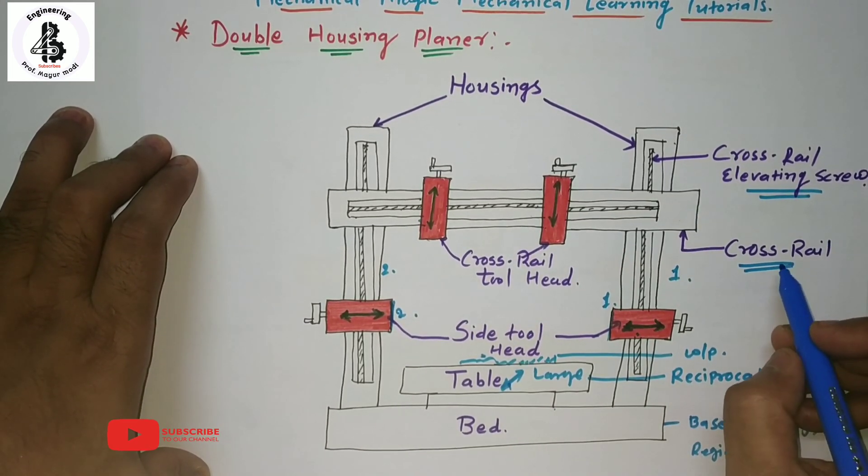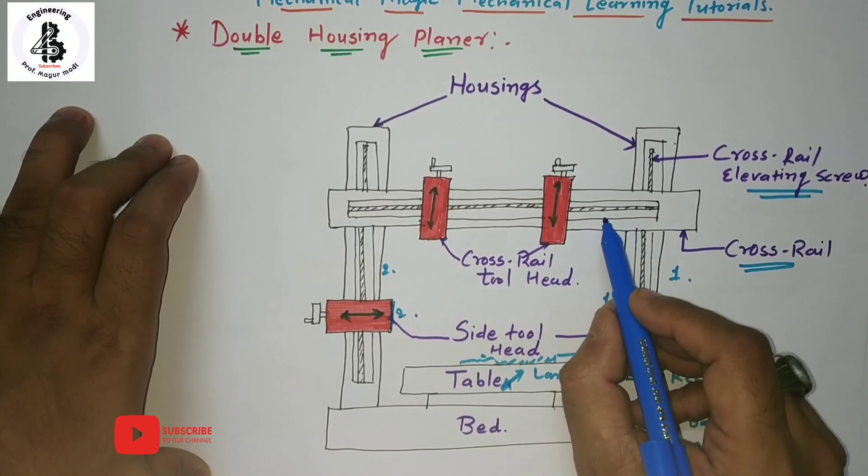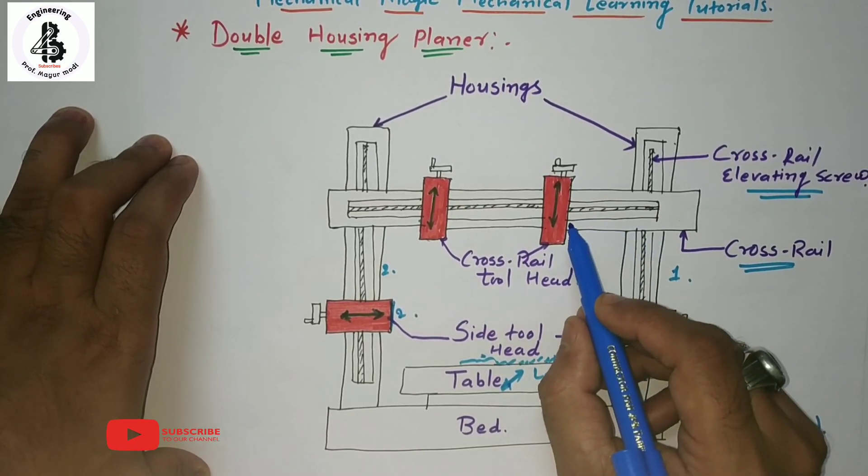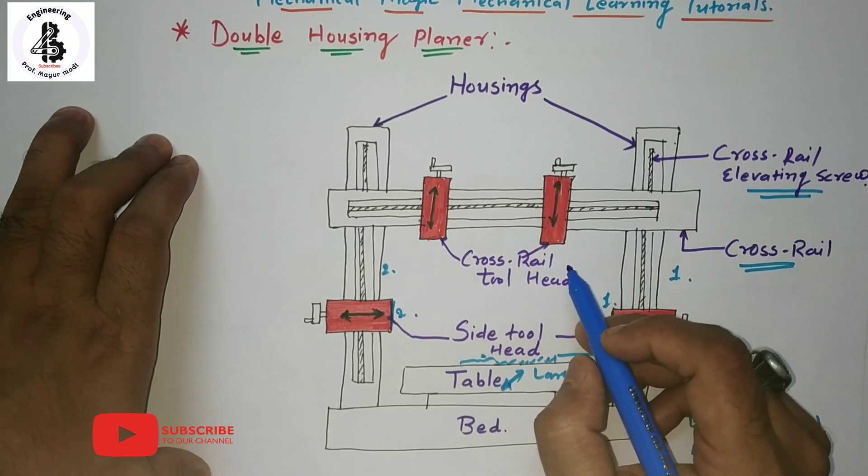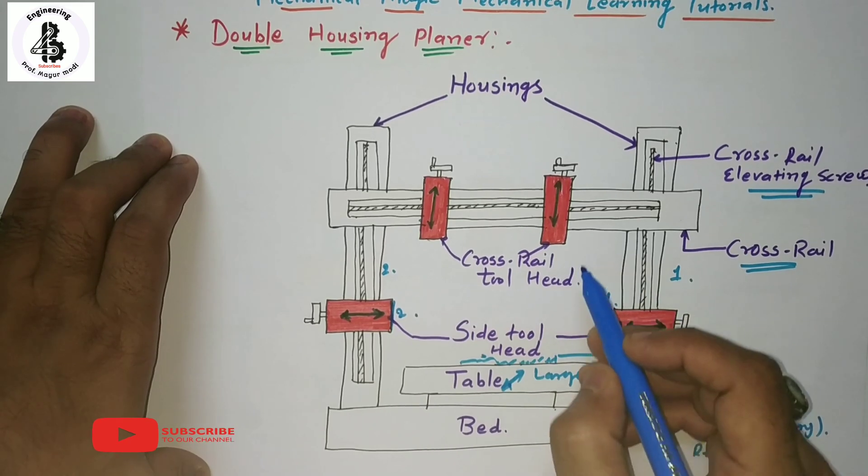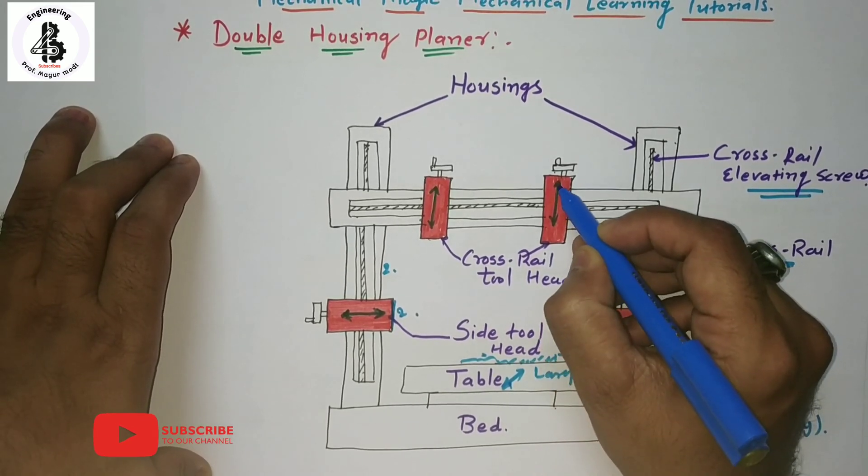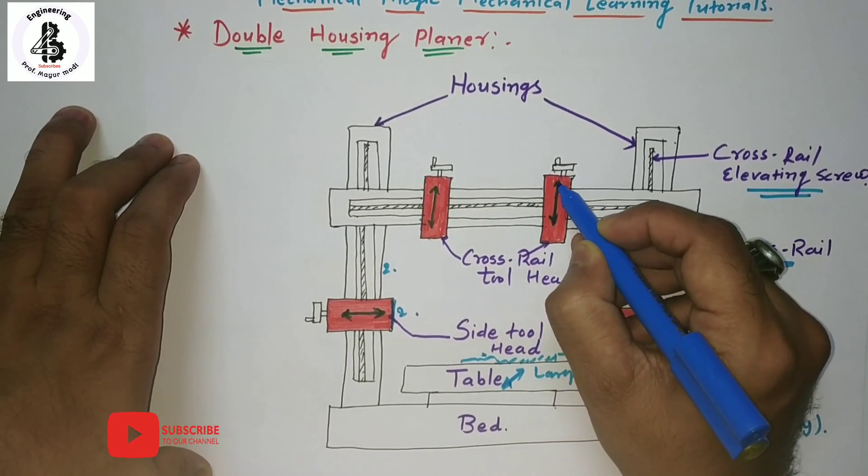Basically, cross rails are being used to support the two heads and these two heads will reciprocate. In that double housing planner, the two tool heads will reciprocate.